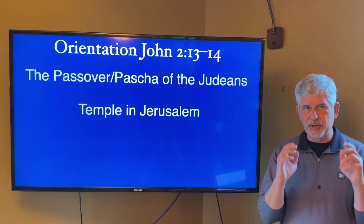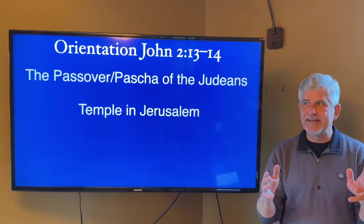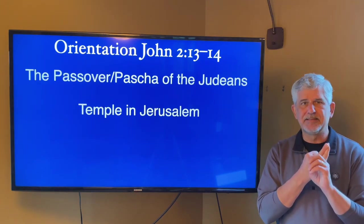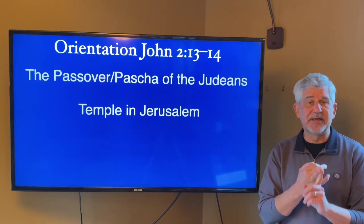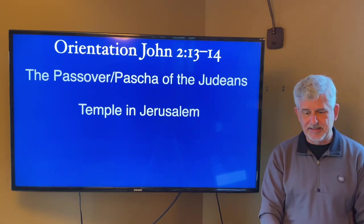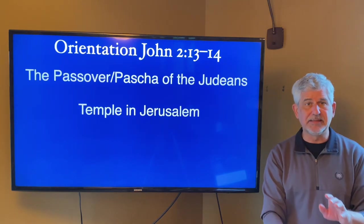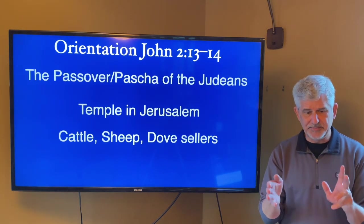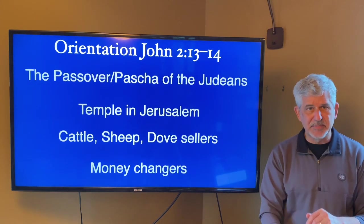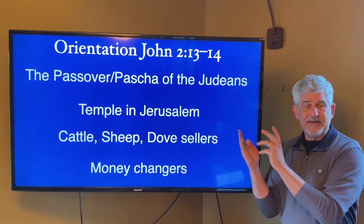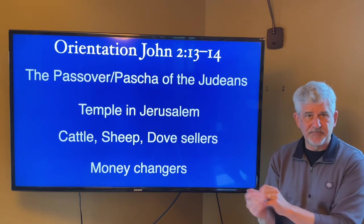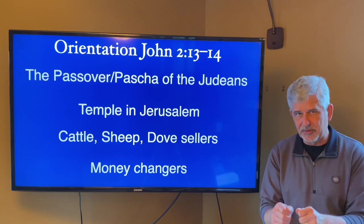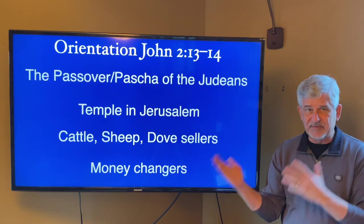Part of the orientation of this story is the setting: it's the Passover, a High Holy Day, and we're in Jerusalem, in the temple. That's no small thing. As part of being in the temple, we have the cattle, the sheep, the dove sellers, and the money changers. If this is the orientation to the story, for many first century Jews going to the temple for Passover, this is all very, very normal.